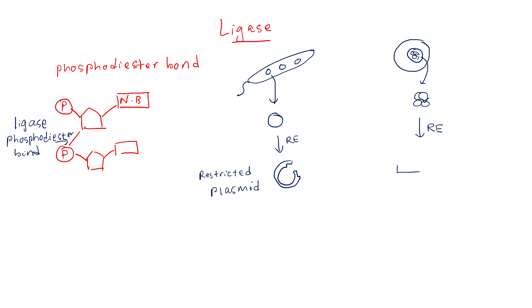In this case, you will have a gene with the same complementary end. For example, if this is TA, then here will be AT. They are complementary, so we mix them together and add ligase enzyme.